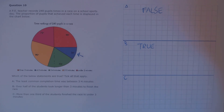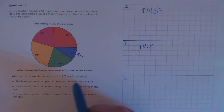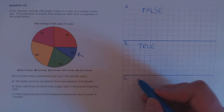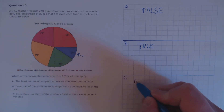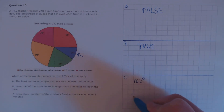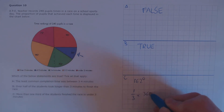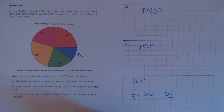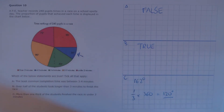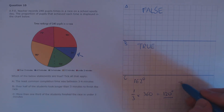For C: more than one third of the students finished the race in under three minutes. Those that finished under three minutes cover 72 and 90 degrees, which is 162 degrees total. One third of the entire circle would be 1/3 times 360, which is 120 degrees. However, these two in total occupy 162 degrees, which is more than one third. So that's true.